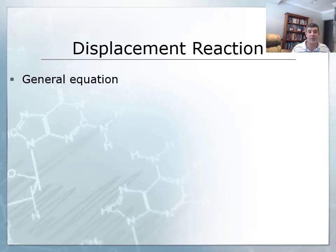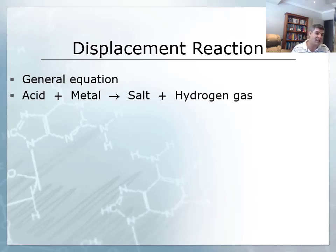So the first thing we want to do as we have with the last two groups of reactions is to look at the general equation. So here's a general equation, an acid, and again, as I mentioned, we're talking about dilute acids plus metal produces salt and hydrogen gas.